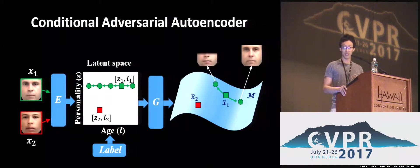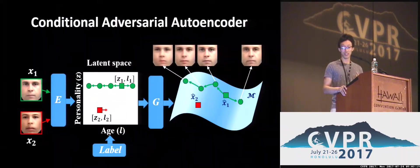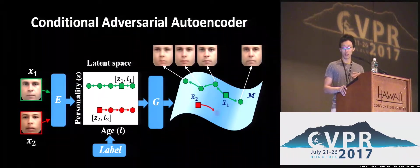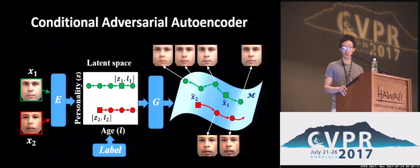Here's an example: traversing to get younger and older faces. The red points show another example, traversing in one direction to generate older faces, and then traversing in the opposite direction to generate a younger face.